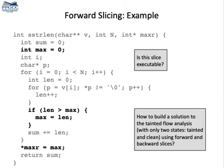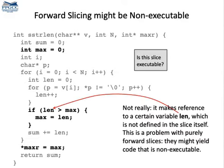Question: is the subset executable? Is it compilable? This code is not actually compilable. For instance, variable LAN in this example would be used without being defined. Nevertheless, a forward slice is useful for many things. For instance, it's very useful in taint flow analysis to try to limit the part of the program that we should consider when we are inspecting the program looking for vulnerabilities.